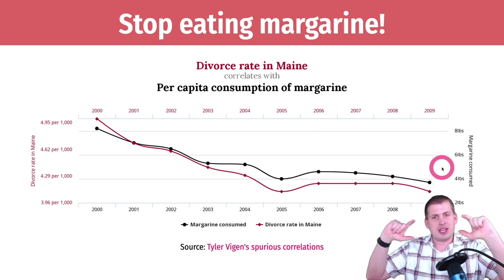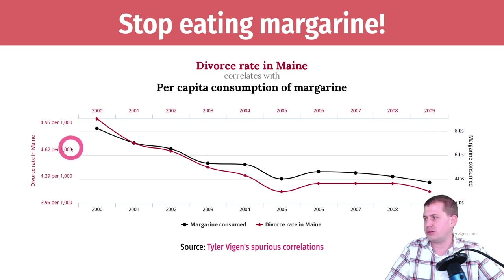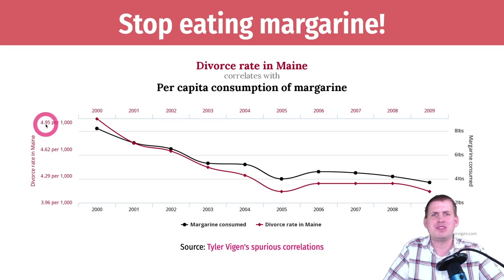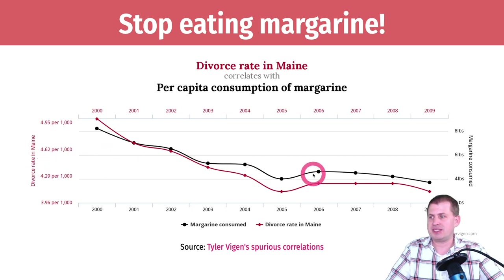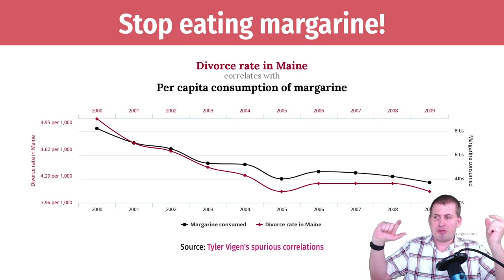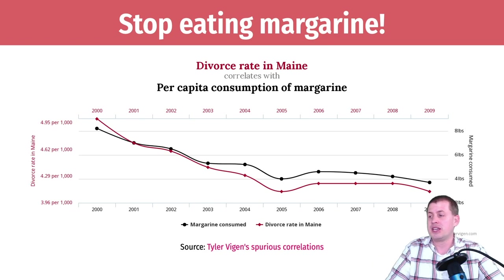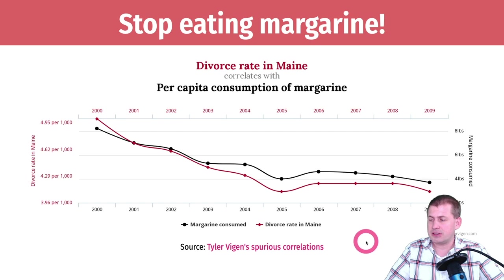The graph creator intentionally shifted the y-axes so the two lines line up perfectly. The margarine consumed axis goes from 2 to 8, which seems reasonable, but on the other side it goes from 3.96 to 4.95 — which was only selected to get these things to line up. By shifting things around on the two axes you can get lots of unrelated data points to line up perfectly.